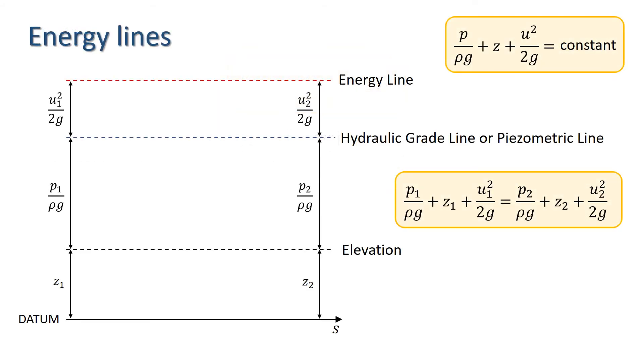The terms in the Bernoulli equation are often represented graphically, using energy lines as shown here. The line at the top represents the total energy, and is simply referred to as the energy line. The line formed by the sum of the first two terms is called the hydraulic grade line, or piezometric line. The elevation z always has to be measured relative to some datum. In the example shown here, energy is conserved, and so the energy line is horizontal.